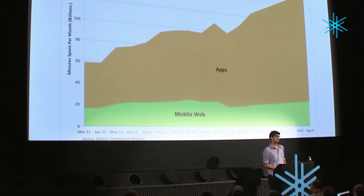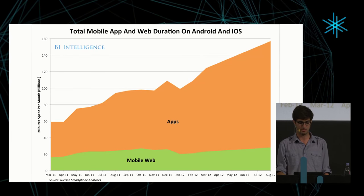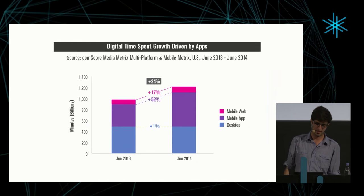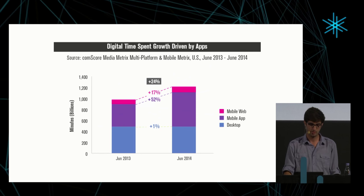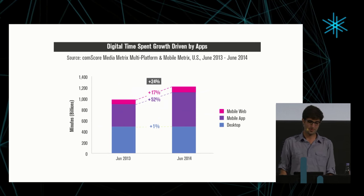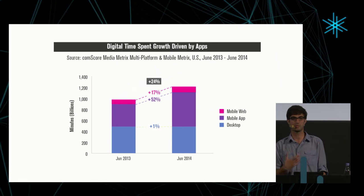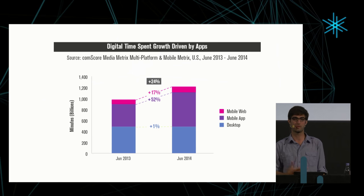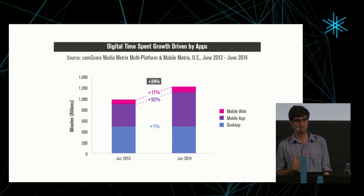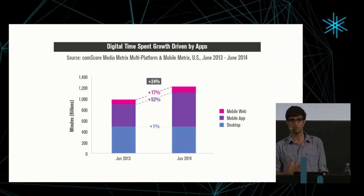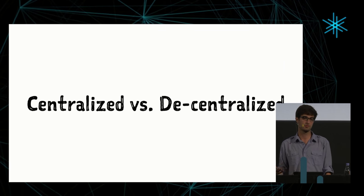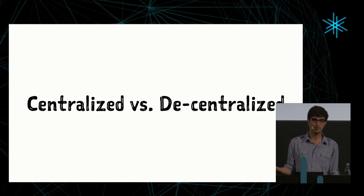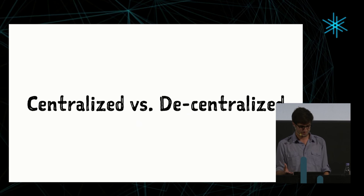Users don't actually care that much. If you look at adoption of mobile apps versus the mobile web, data from 2011 to 2012 shows apps are dominant. More recent data from 2013 to 2014 shows both mobile web and mobile apps grew, but mobile apps grew a lot faster. As a user deciding what apps I want to use, it turns out I actually don't care whether it's mobile web or a native app. What I care more about is whether the app is centralized versus decentralized.